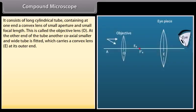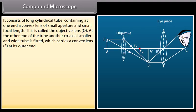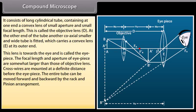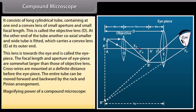Compound microscope. It consists of a long cylindrical tube with a convex objective lens O of small aperture and short focal length at one end. At the other end, a coaxial tube carries a convex eyepiece lens E of somewhat larger focal length and aperture. Cross wires are mounted at a definite distance before the eyepiece. The entire tube can be moved by the rack and pinion arrangement. Magnifying power of a compound microscope: M = −(V0/U0) × (D/FE + D/VE).